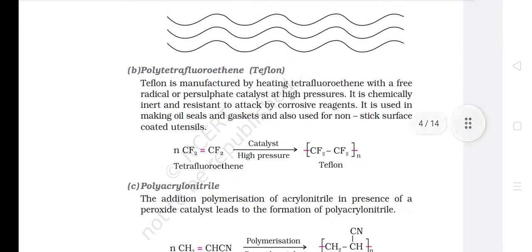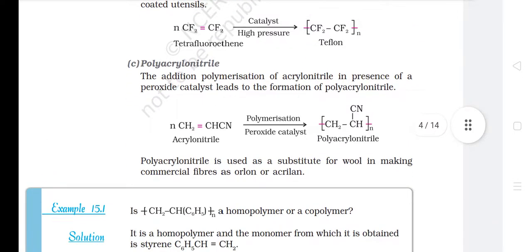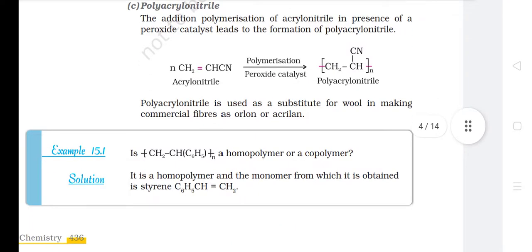B. Polytetrafluoroethene (Teflon). Teflon is manufactured by heating tetrafluoroethene with a free radical or persulfate catalyst at high pressures. It is chemically inert and resistant to attack by corrosive reagents. It is used in making oil seals and gaskets and also for non-stick surface-coated utensils. C. Polyacrylonitrile. The addition polymerization of acrylonitrile in the presence of a peroxide catalyst leads to the formation of polyacrylonitrile, which is used as a substitute for wool in making commercial fibers such as orlon or acrylon.